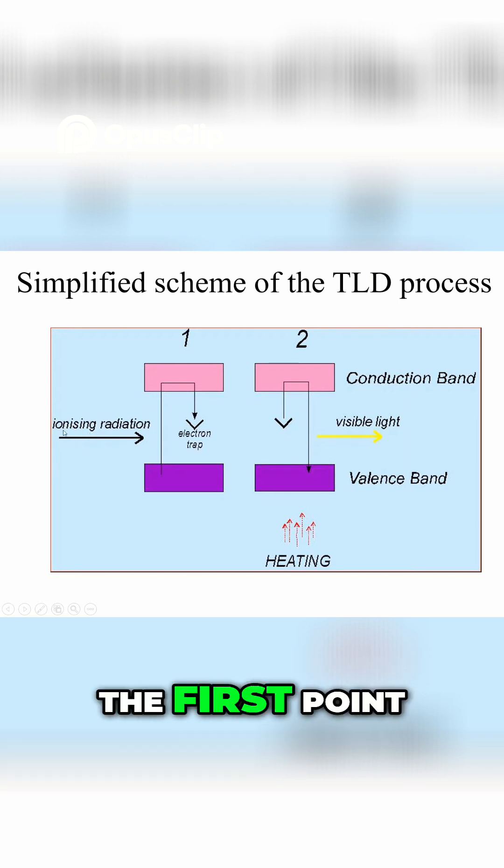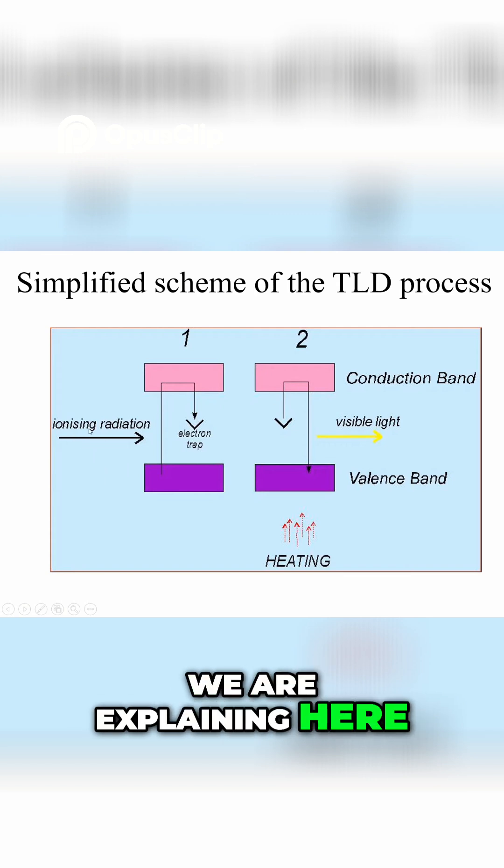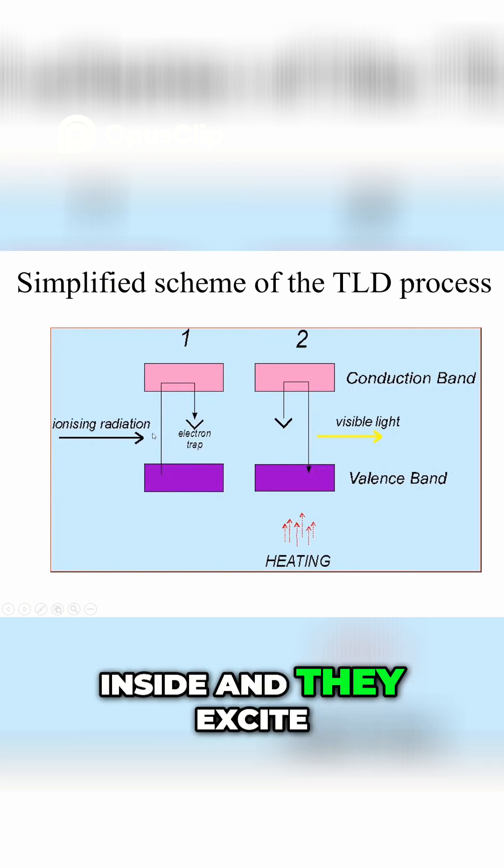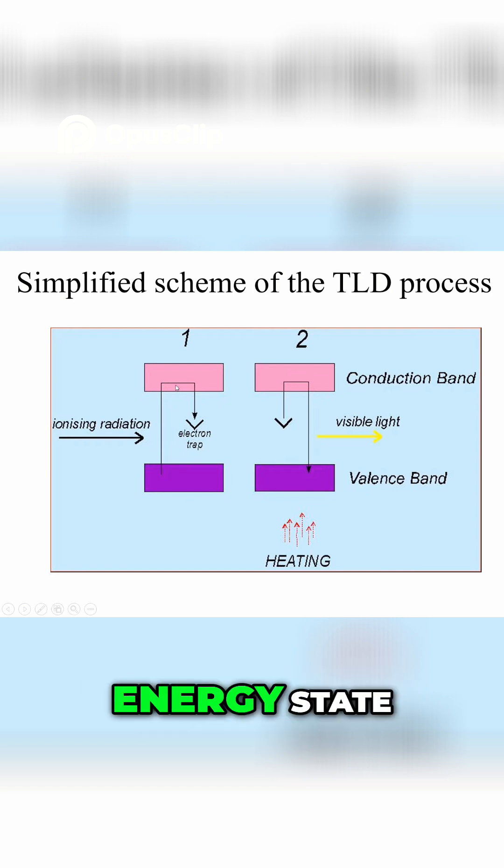This is the first one we are explaining here - that ionizing radiations come inside and they excite the electrons from low energy state to higher energy state.